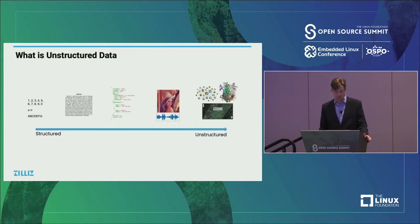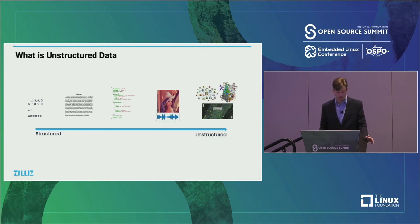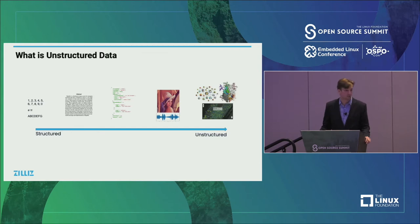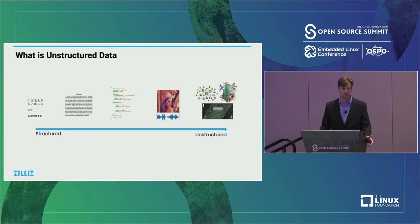Unstructured data accounts for roughly 80% of all the data we currently hold. It has no structure and is really hard for machines to understand. Things that fall into this category are audio, images, videos, and language — stuff that needs more processing for machines to understand. Then there's semi-structured data, which is kind of in between. A good example is an email: all emails have a header, a subject, a body, and maybe attachments. There is overall structure, but what's inside those areas is unstructured — an email body is just language, and machines will have a hard time understanding that. Other examples are XML and JSON.